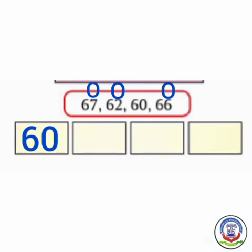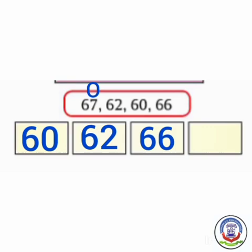Now from the remaining numbers, which number is smallest? The 1s place numbers are 7, 2 and 6. Here, 2 is smallest. So we will write 62 after 60 in the box. From the remaining numbers, the 1s place gives us 7 and 6. Here, 6 is smallest. So we will write 66 after 62. Now remains 67. So we will write 67 last in the box as it is the largest number.